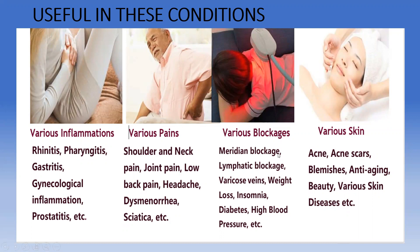A lot of people have blockages in their system, and that's why they are sick. There are meridian blockages, which stop energy flow, and lymphatic blockages, which result in edema or toxins accumulating in the body. We have varicose veins — this will help improve the integrity of the veins. For weight loss, I was able to lose about three inches off my waistline using these products in five days. For insomnia, one of the first testimonies people share is that they sleep well and deep.